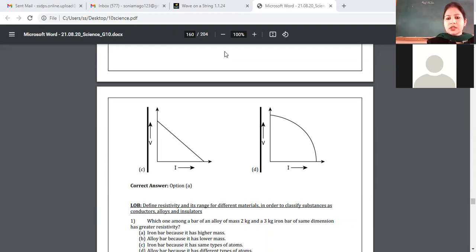We are to tell whose resistivity is more. Iron bar because it has greater mass, alloy bar because it has lower mass, iron bar because it has same type of atoms, alloy bar because it has different types of atoms. There is alloy bar of mass 2 kg and iron bar of mass 3 kg. Two bars have been given. Dimension same, length same or thickness same, area of cross section same. So which one will have greater resistivity? What do you say? What would be the answer out of these two? What it is about?